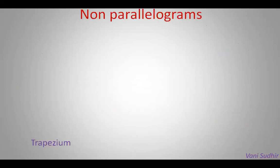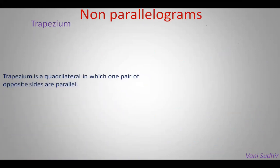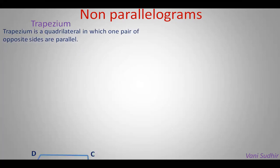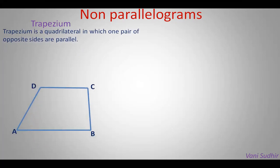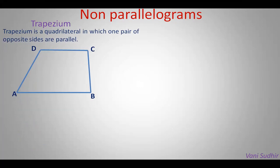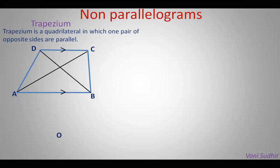Now let us discuss about non-parallelograms. One is trapezium. It is a quadrilateral in which only one pair of opposite sides are parallel. In trapezium ABCD, DC is parallel to AB. The diagonals AC and BD intersect at O, and in a trapezium the diagonals intersect such that AO/OC equals BO/OD.